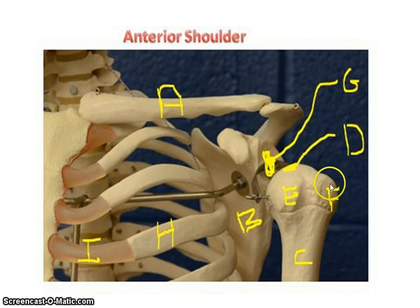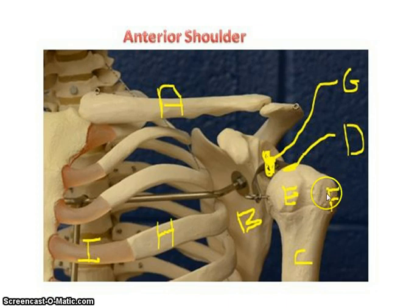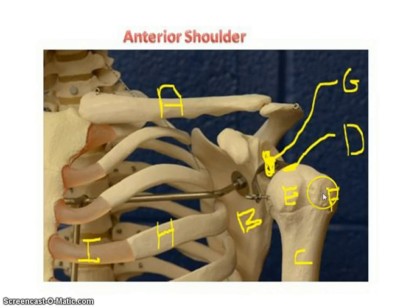On the lateral side of the humerus is what's called the greater tubercle. So when you find the head, which is medial, you go lateral and you have the greater tubercle. Then in the anterior portion of the humerus you have the lesser tubercle. Head is medial, greater tubercle is lateral, and the lesser tubercle is anterior. These tubercles are where muscles are going to attach.